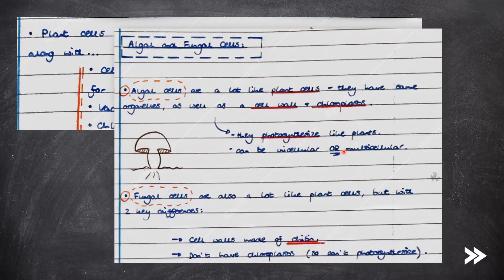Fungal cells are also a lot like plant cells, but with two key differences. First, the cell wall is made of chitin, and second, they don't have chloroplasts, so they cannot photosynthesise.